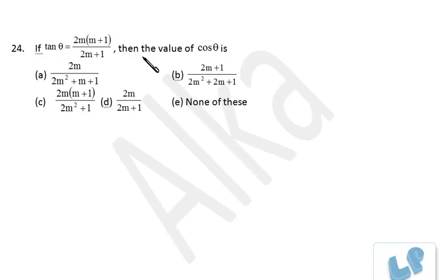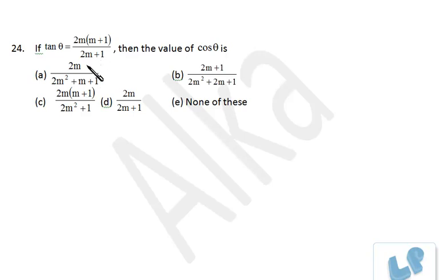In this case, tan θ is given and I have to find cos θ. For simplicity, you can assume any comfortable value of m. Don't try to choose 0 or 1 because that will lead to incorrect calculations. Just try to choose 2. So if I put m as 2, let's see what tan θ gives us.